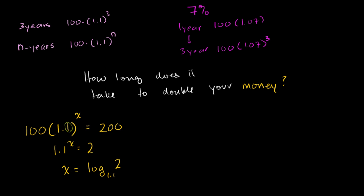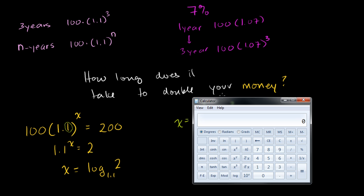To solve that equation, most calculators don't have a log base 1.1. I've shown this in other videos - you could also say x is equal to log base 10 of 2 divided by log base 10 of 1.1. This is another way to calculate log base 1.1 of 2. Most calculators have a log base 10 function, and these are equivalent. So in order to say how long does it take to double my money at 10% a year, you'd have to put that in your calculator.